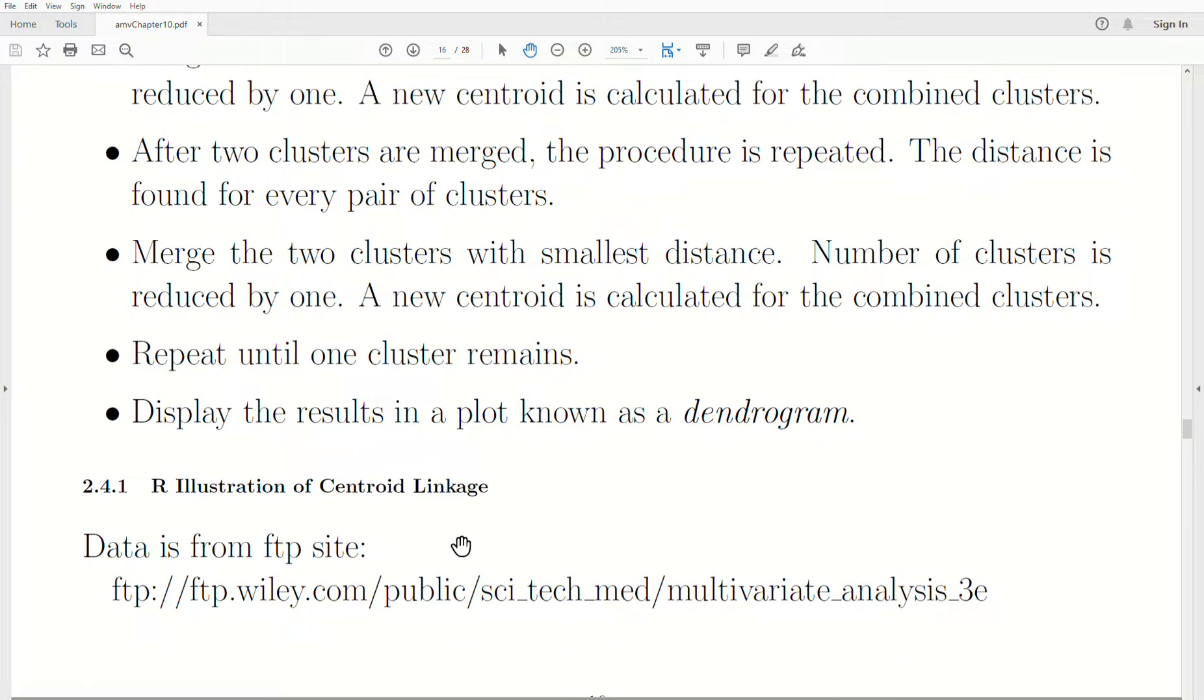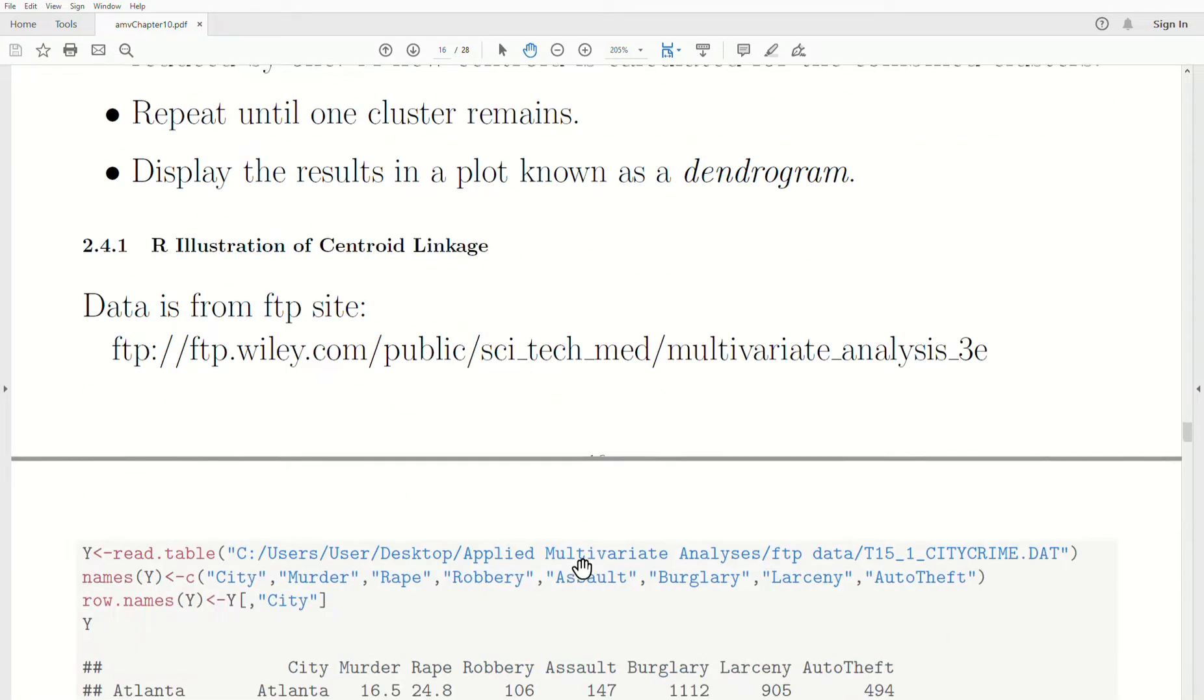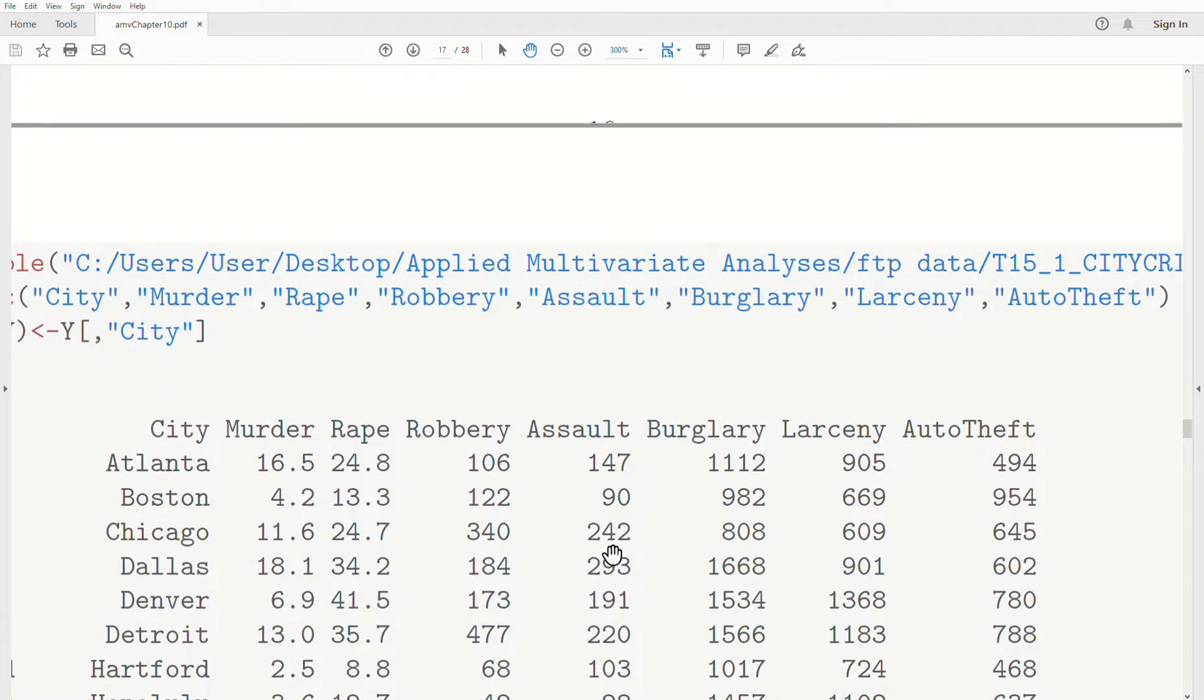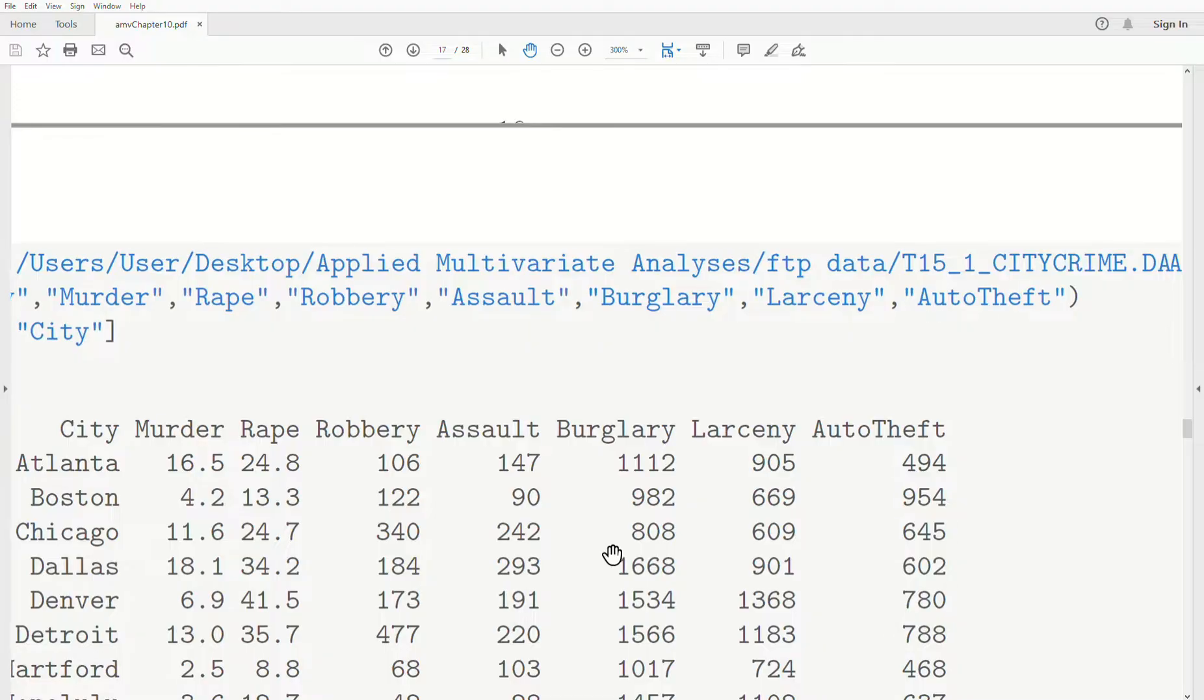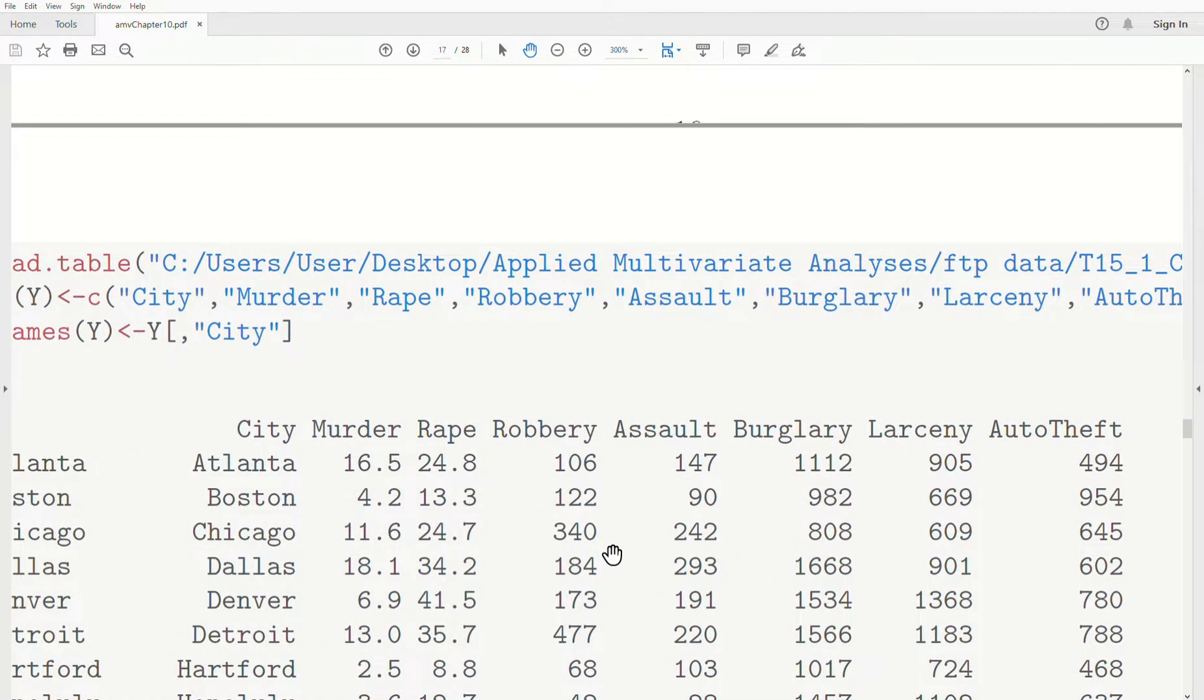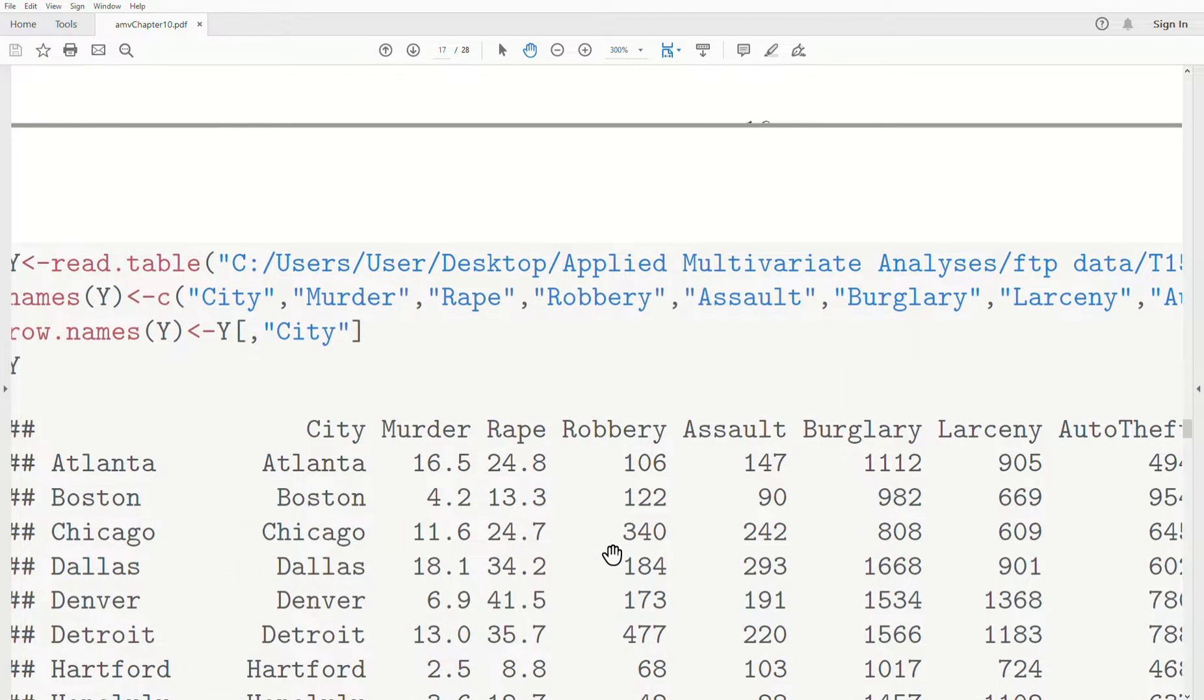Now let's do an R illustration of the centroid linkage method. Now the data are from an FTP site, this one specifically. Now we're using the city crime data from that FTP site where it looks at seven different crimes: murder, rape, robbery, assault, burglary, larceny, auto theft in these various cities.